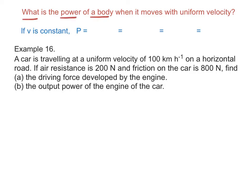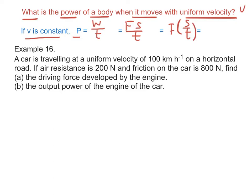What is the power of a body when it moves with uniform velocity v? If v is constant, we have power equals work done over time, equals Fs over time, equals F times s over t. Therefore, the power of a body traveling at uniform velocity v is Fv.